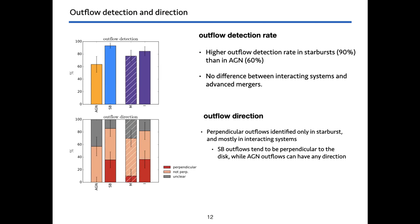AGN outflows can have any direction depending on how the AGN is oriented with respect to the disk. Also, if outflows from AGN are within the disk, they may be more difficult to detect with our technique.